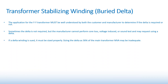If a delta winding is used, it must be sized properly. Sizing the delta at 30% of the main transformer in VA may be inadequate. In the industry, years ago the default was to size the stabilizing winding at 30% of the main transformer in VA, which can be inadequate in some cases.